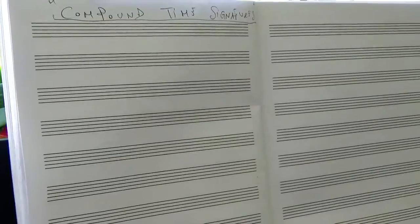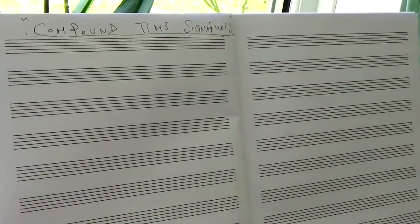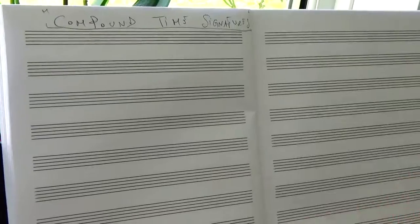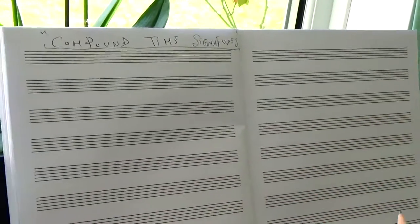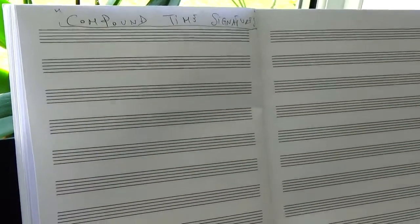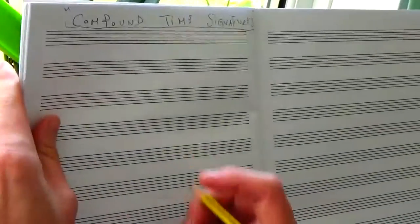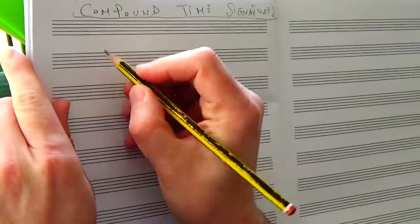As soon as you start using the 8, the number 8 underneath, we are going to face the compound time signatures. From any of the simple time signatures will be derived a compound time signature. And now indeed, let's write on the left side the simple ones.